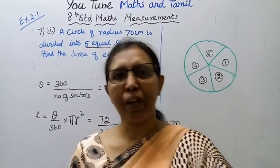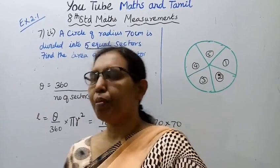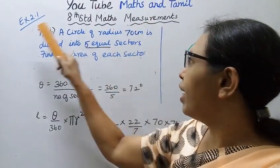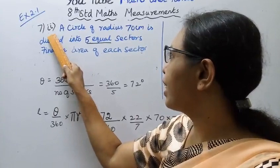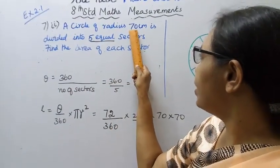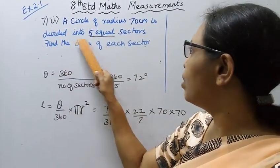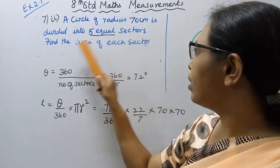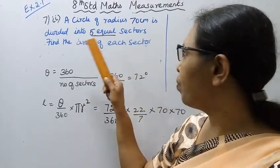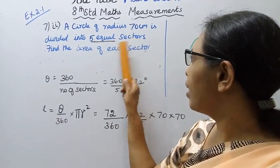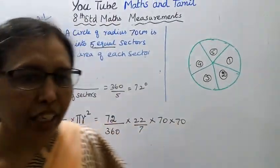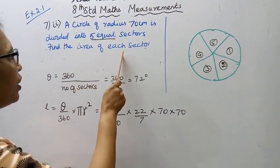Hello students, welcome to Max and Tumult channel. This is Tenamax Tam on measurements, exercise 2.1, 7th grade. A circle of radius 70 centimeters is divided into 5 equal sectors. Find the area of the sector and the length of the arc of the sector.